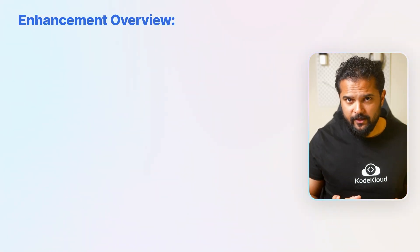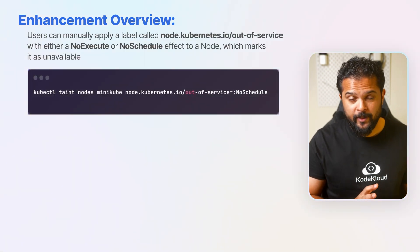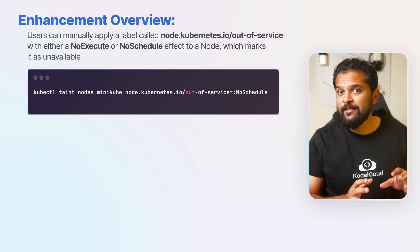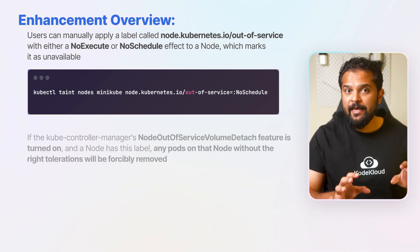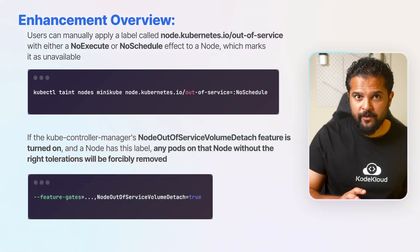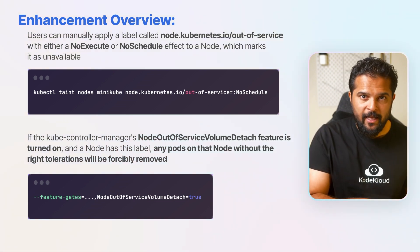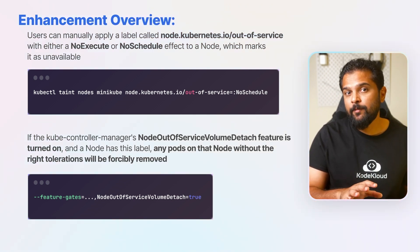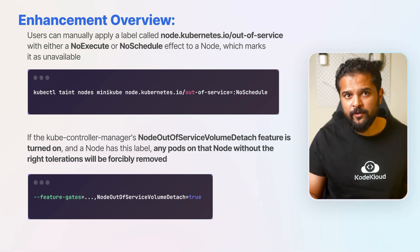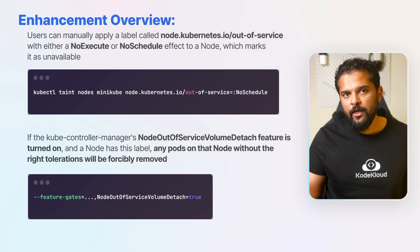The solution is that users can manually apply a label called node.kubernetes.io/out-of-service with either a no-execute or no-schedule effect to a node, marking it as unavailable. If the kube controller manager's node out of service volume detach feature is turned on and a node has this label, any pods on that node without the right tolerations will be forcefully removed. This speeds up the process of detaching volumes for pods that are ending on the node and letting the pods quickly get back up on another node.